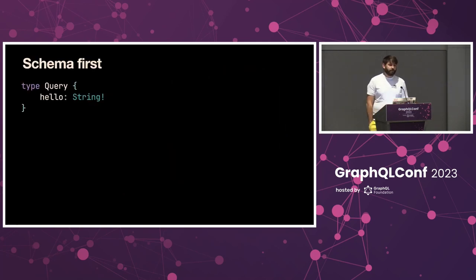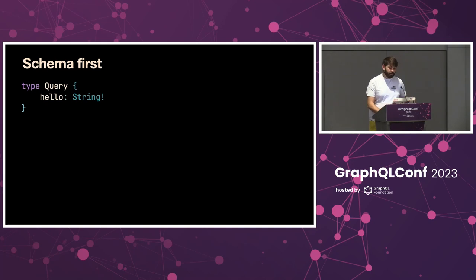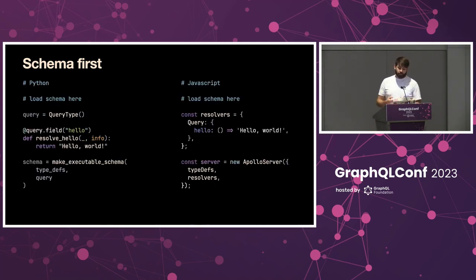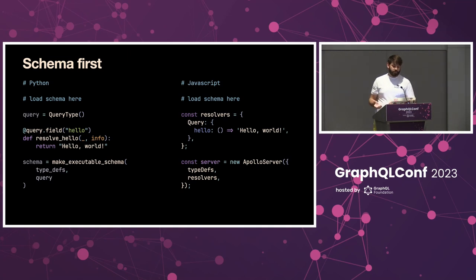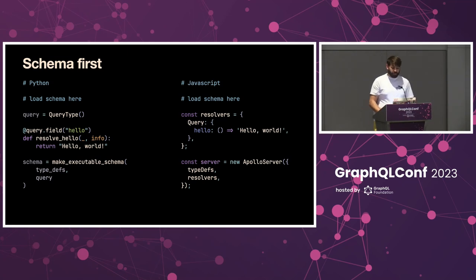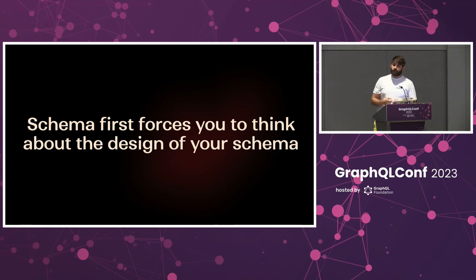In Schema First, you pretty much write your schema before writing the resolvers. For example, here we have a very basic schema — just one type and one field which returns a string. Then we use libraries to load the schema and attach resolvers to the fields of our types. Here we have Python on the left using Ariadne and JavaScript on the right using Apollo Server. And one of the benefits of Schema First is that it forces you to think about the design of your schema, which is a really good thing.